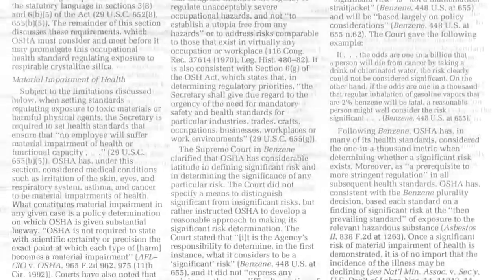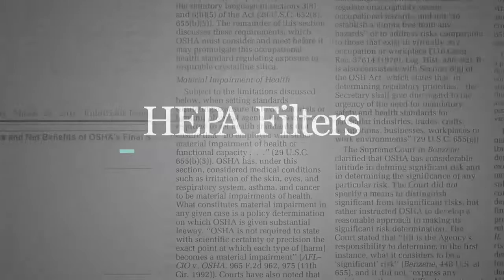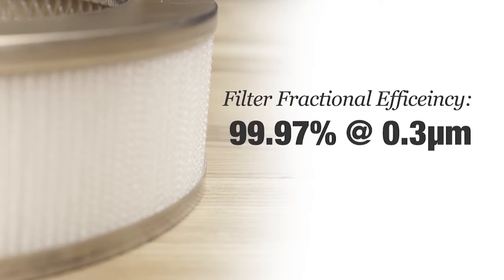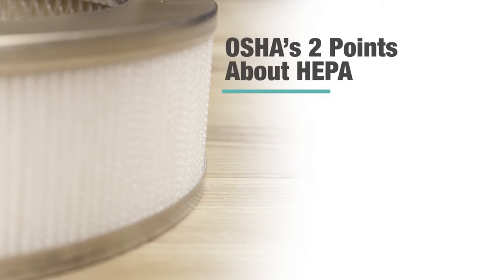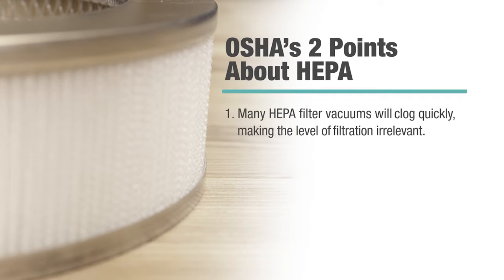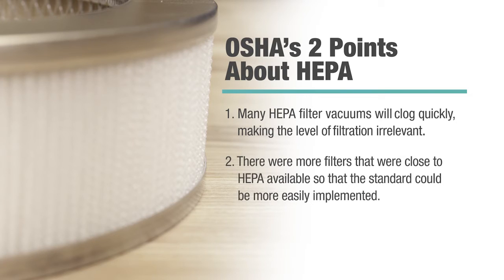Let's first take a look at what is written about filter efficiency. OSHA had originally considered requiring HEPA filters, which provide a filter efficiency of 99.97% at 0.3 microns, because they believed they offered better protection from silica dust. However, they found two things: one, too many HEPA filter vacuums will clog quickly, making the level of filtration irrelevant; and two, there were far more filters close to HEPA available, so the standard could be more easily implemented.